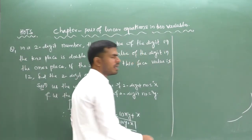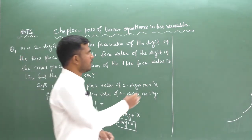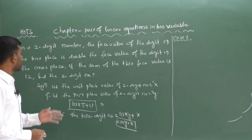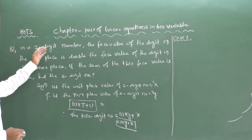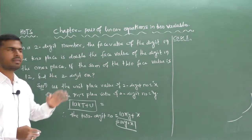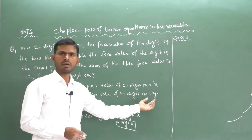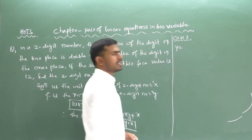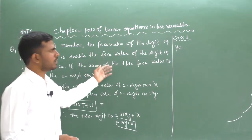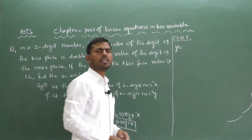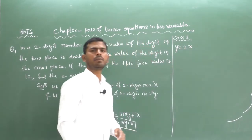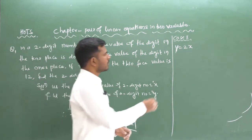Now according to Case 1 from the problem statement: the face value of the digit in the tens place is double the face value of the digit in the ones place. The tens place value is y, and it is double the unit place value x. So we write: y = 2x. This is Equation 1.